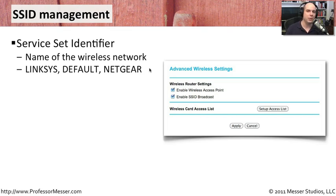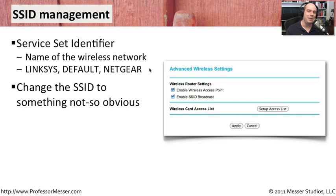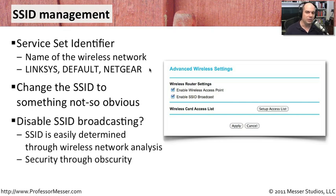Should we really be broadcasting the fact that we have a wireless access point here? One thing you can do is change the SSID — the service set identifier — to something that's not quite so obvious. Make sure it doesn't use a default name like Linksys, and maybe don't give it a name referring back to your organization. Give it something very generic. You can also disable broadcasting completely — this is a configuration setting in my access point; here's a checkbox to enable SSID broadcast or turn it off.